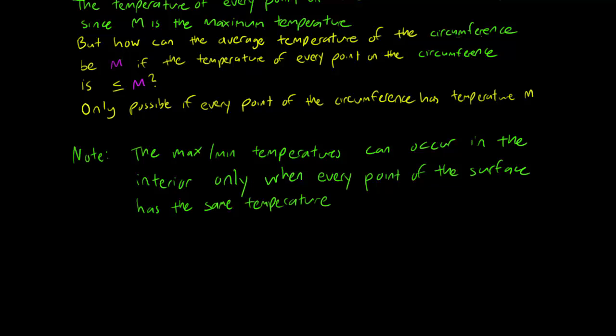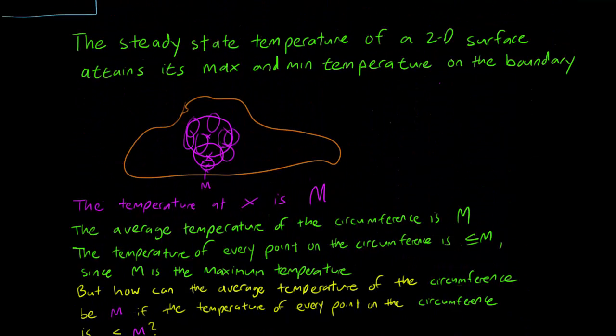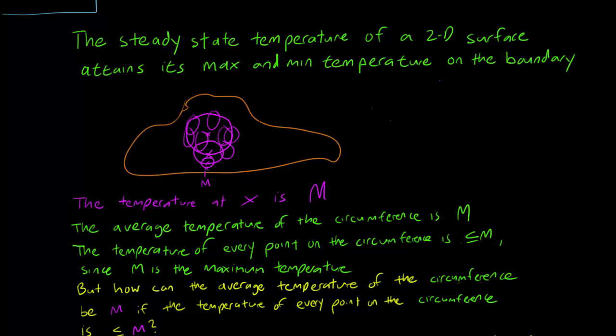The maximum and minimum temperatures can occur in the interior of the surface only when every point of the surface has the same temperature. So if you have a max temperature somewhere in the interior, you can use this argument to paint the entire surface pink.